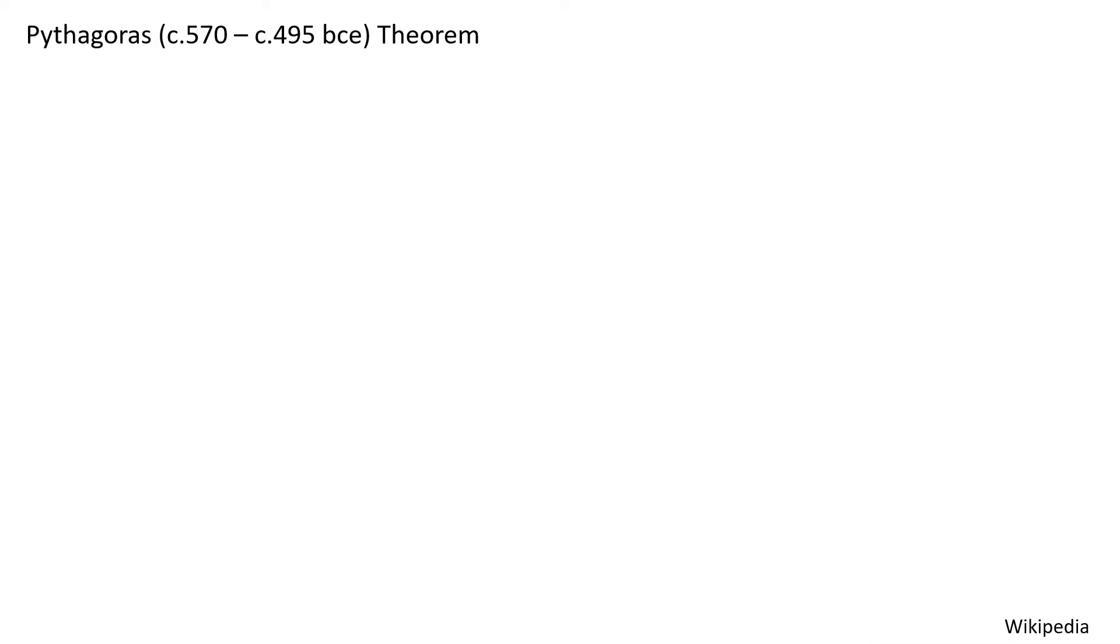Pythagoras was born circa 570 and died circa 495 before the common era. Let's talk about his theorem. It begins with a right triangle, which means a triangle that has one 90 degree angle. Let's say that side A has 4 units in length, side B 3 units in length, and that leaves side C with 5 units in length.